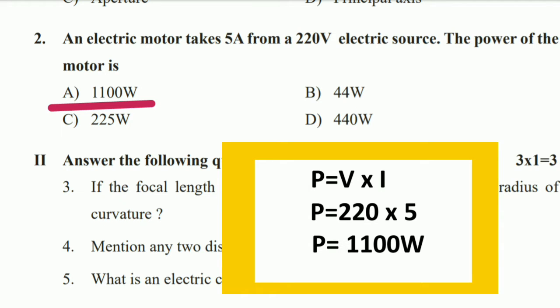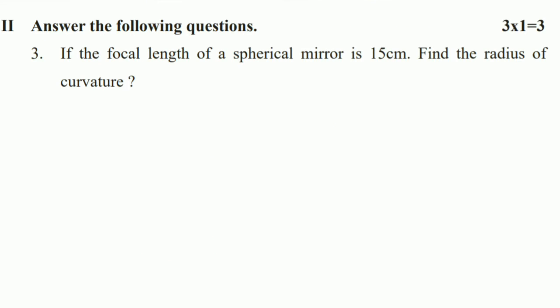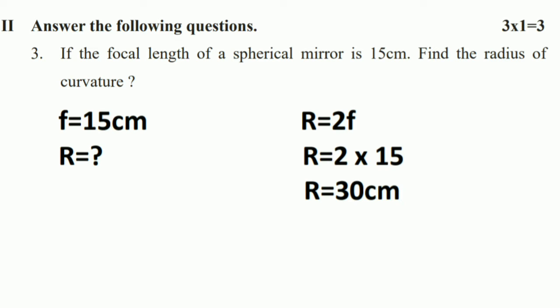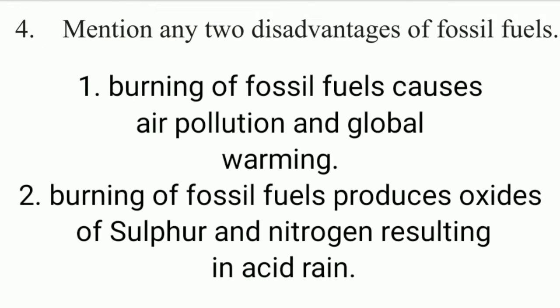Next question: if the focal length of a spherical mirror is 15 centimeters, find the radius of curvature. Using the formula R = 2F, and F = 15 cm, so R = 2 × 15 = 30 centimeters.